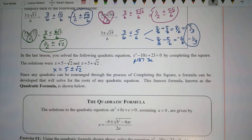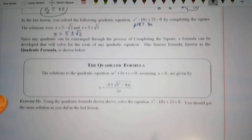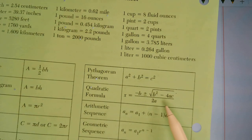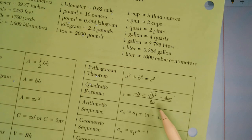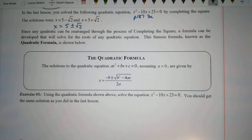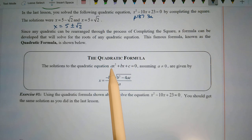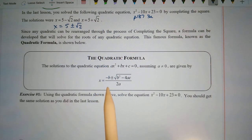Now we want to use the quadratic formula to solve that same equation. Everyone is familiar with the quadratic formula from algebra 1, and it is on your reference sheet, but at this level of math you should memorize it. For any quadratic equation in standard form, ax squared plus bx plus c equals 0 — and a cannot be 0, otherwise we'd have a linear equation — x equals negative b plus or minus the square root of b squared minus 4ac, all over 2a.